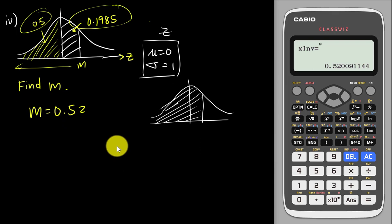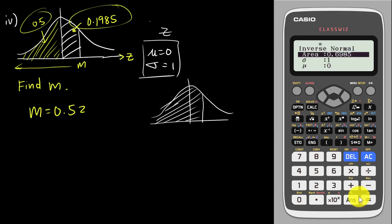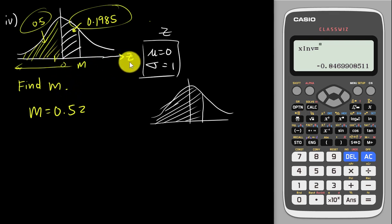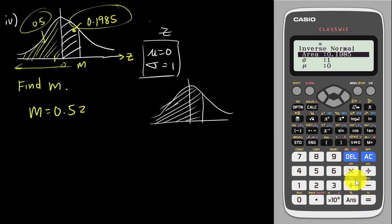This is something very important to understand: the preset for inverse normal. Many students mistakenly type 0.1985 directly — they get a weird answer like m = −0.84, which is on the negative side. Since the mean is zero and m should be at a positive Z value, that answer is clearly wrong. Whenever you use the Inverse Normal feature, make sure you understand how it works before inserting any value.